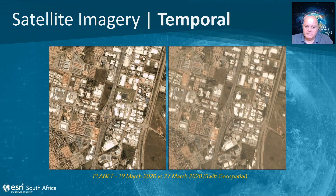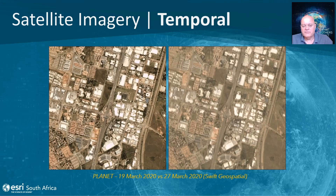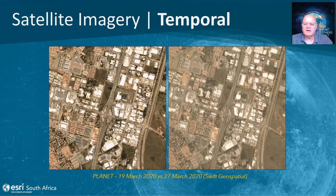Closer to home, we have the use of Planet data. We can read a service from Planet directly into ArcGIS Pro, giving us access to three-meter data on a daily basis. On the left, an image from the 19th of March shows cars on the road and in car parks just before lockdown, while on the right — the day lockdown started — there are no cars on the highway.